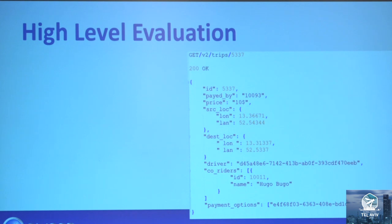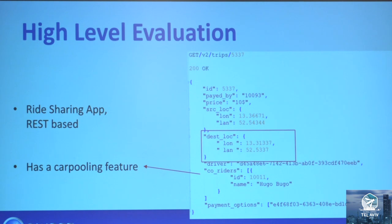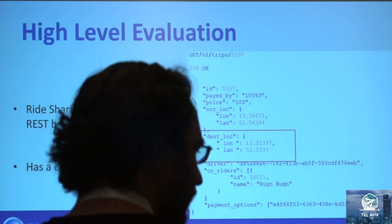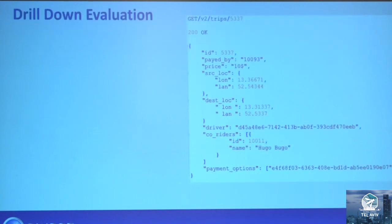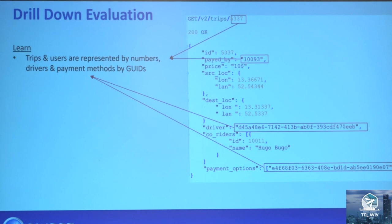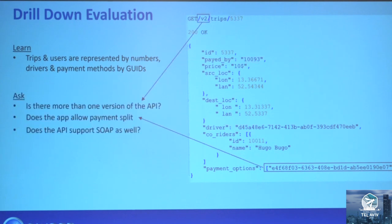Here's an API call from a ride-sharing app. Let's understand how to read it. You can tell it's REST-based because it uses JSON. You can see it has a carpooling feature that allows sharing rides with other riders. In the drill-down evaluation, trips and users are represented by integers, while drivers and payments are represented by GUIDs — random strings. You should ask if there's more than one version of the API. Notice that the payment option is a string inside an array, suggesting a payment-splitting feature.